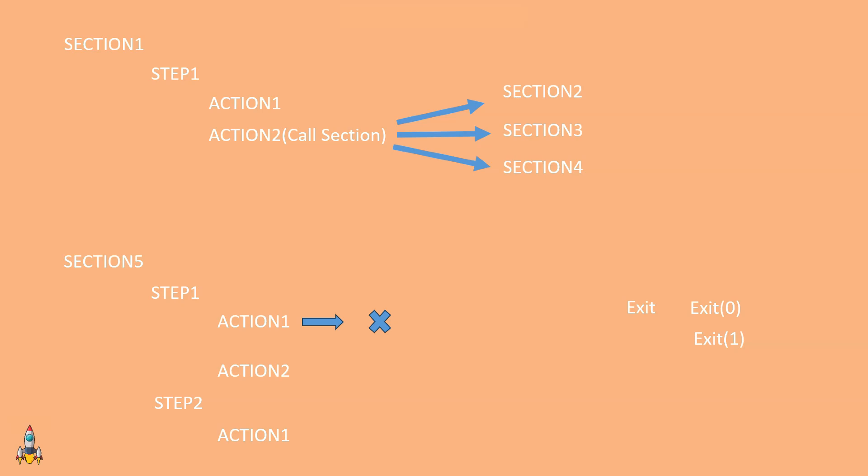The question is: what is the difference between exit 0 and exit 1? The difference lies in where the flow of execution goes after you terminate execution at action 1. For example, if after stopping execution you want the flow to go to the next action in the same step — essentially skipping the current PeopleCode action and moving to the next available action — you can achieve this using exit 0. Exit 0 allows you to skip your current PeopleCode action and move to the next set of available actions in the same step.